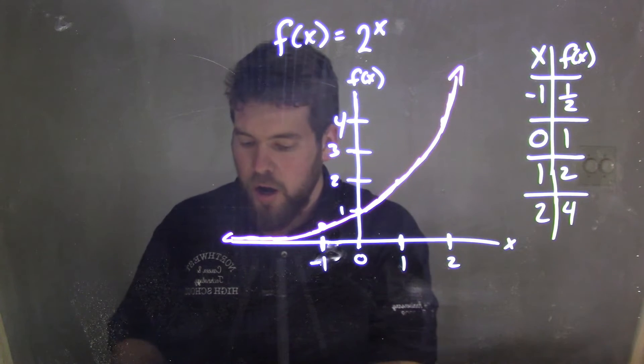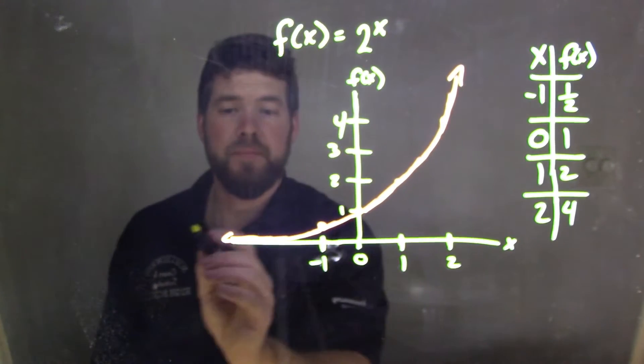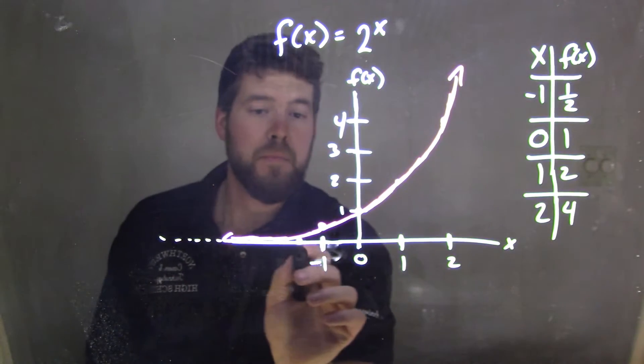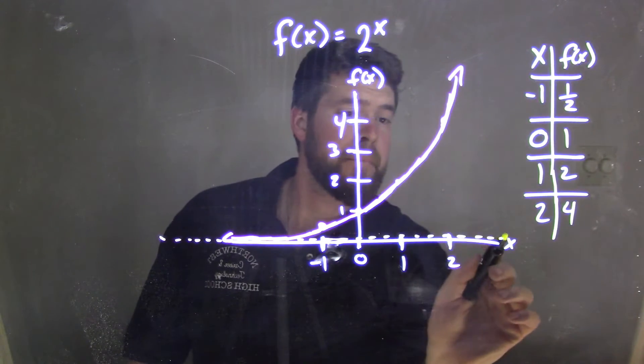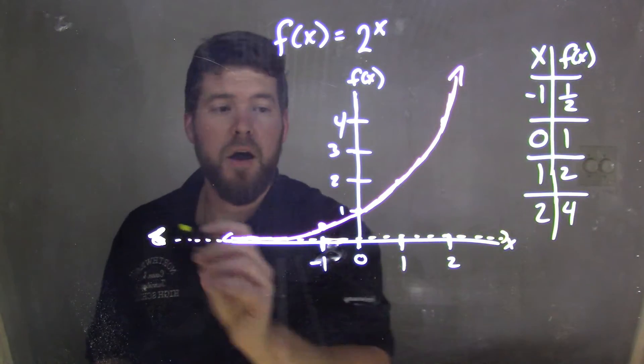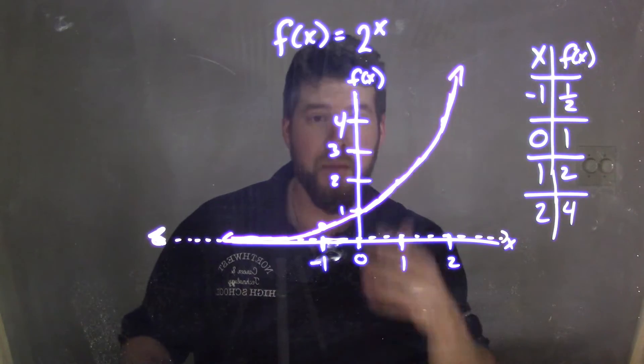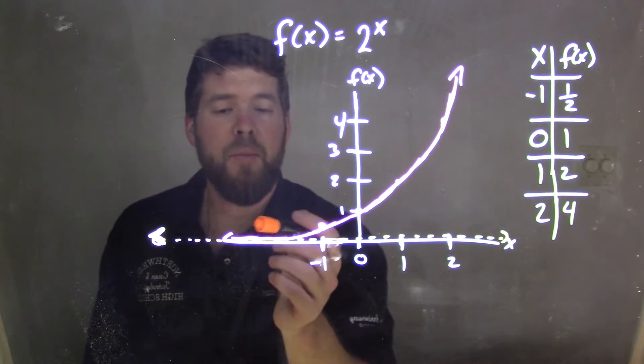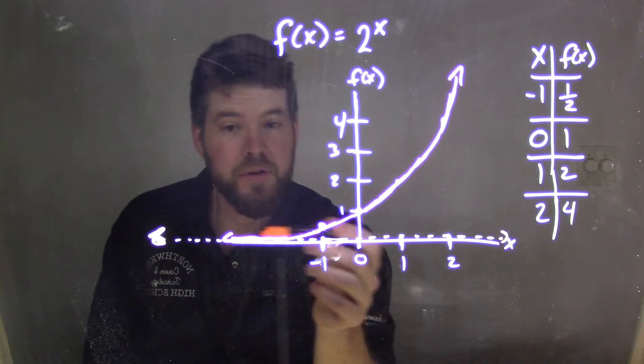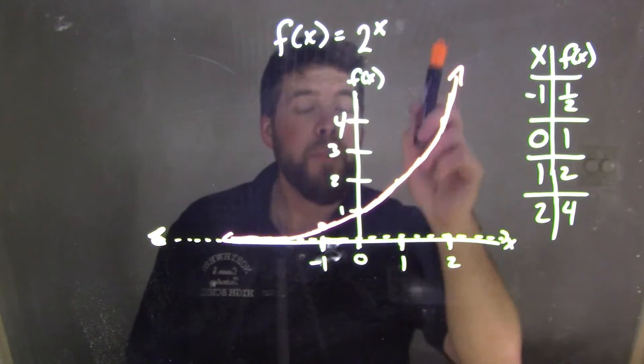What we have on the x-axis is a horizontal asymptote. We have a horizontal asymptote at y equals 0. So if you want to talk about this function, we see that as x goes to negative infinity, it approaches 0. But as it goes to positive infinity, it goes up to positive infinity.